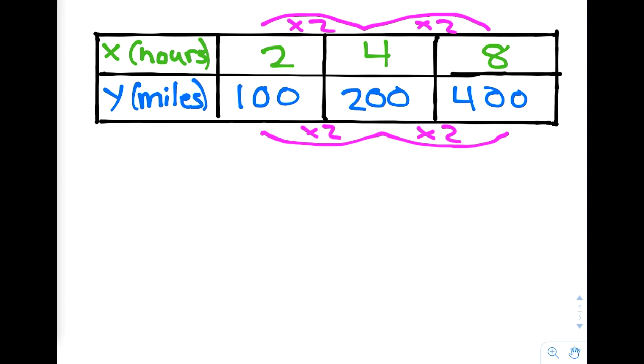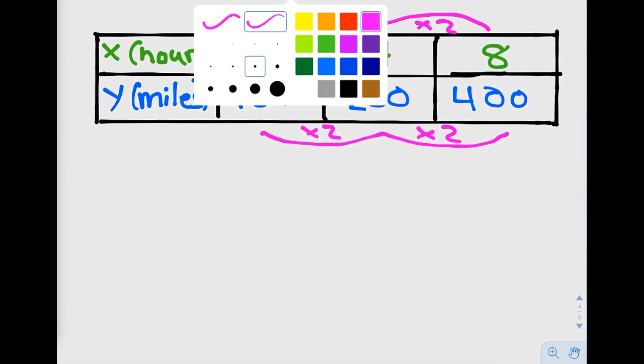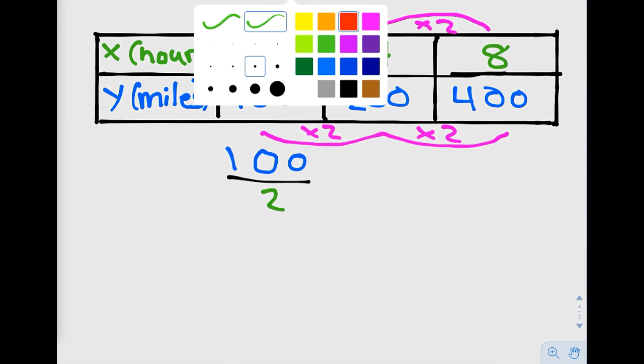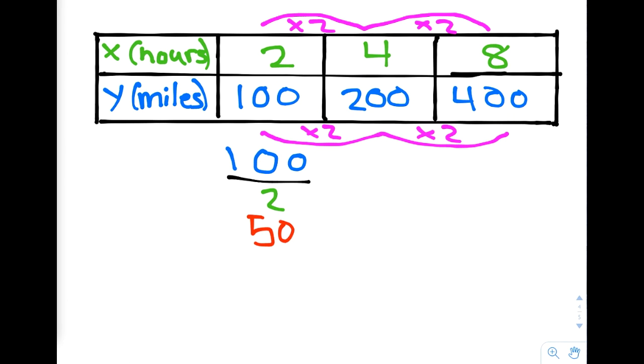Now let's find the constants of proportionality of these ratios. In the first column, we'll divide our y, which is 100, by our x, which is 2. We already know that this evaluates to 50. In the second column, we'll divide our y, which is 200, by our x, which is 4. If we divide 200 by 4, our constant of proportionality is 50 again. For the third column, we'll divide 400 by 8, which is 50 as well.